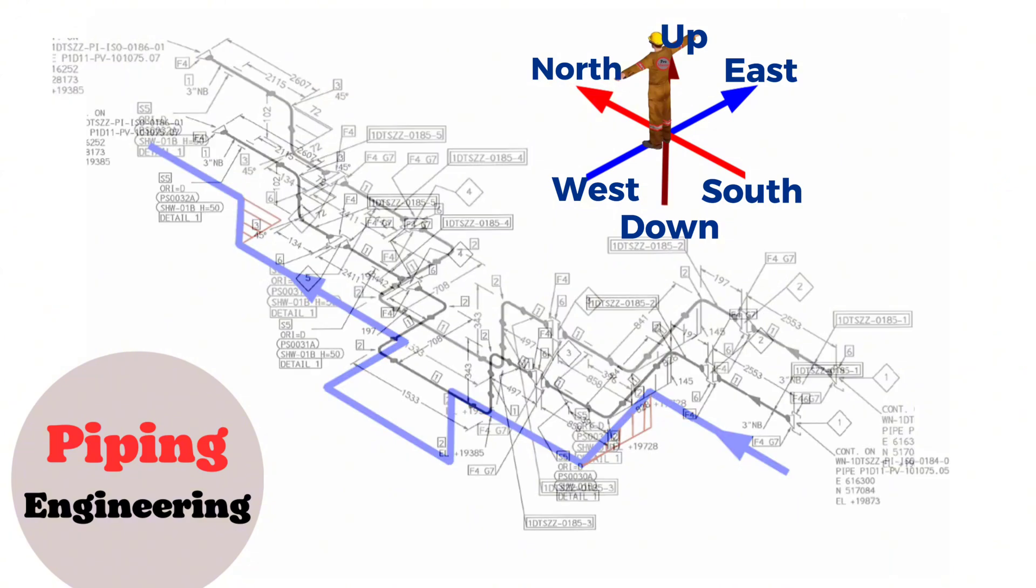We will start to read this pipe drawing from this point, because this is how the direction of the pipeline is shown. The pipeline starts from this flange and extends to the northwards.